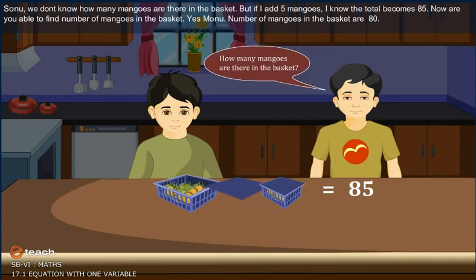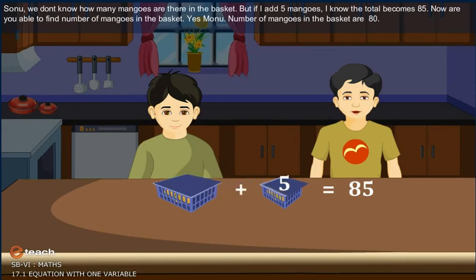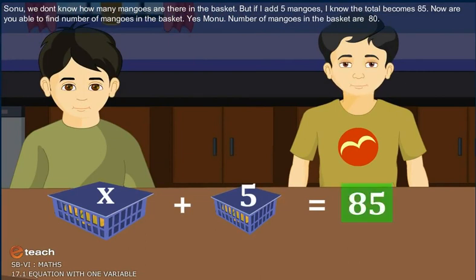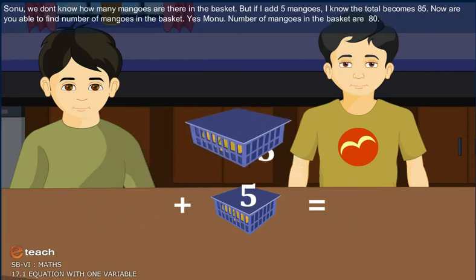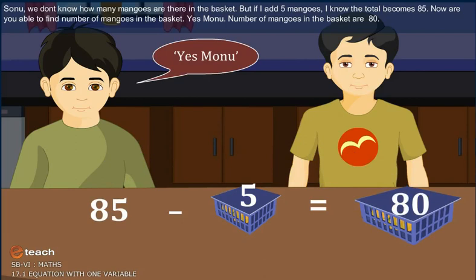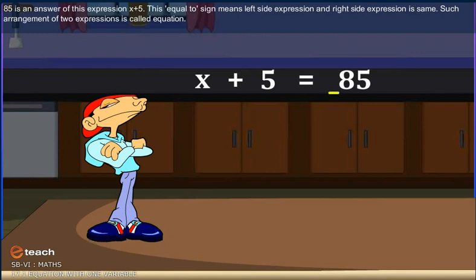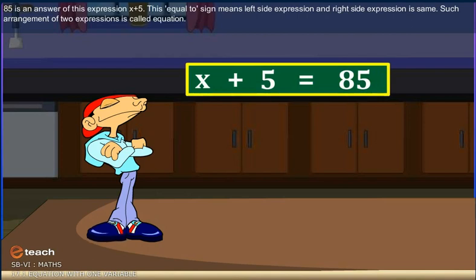Sonu, we don't know how many mangoes are there in the basket. But if I add 5 mangoes, I know the total becomes 85. Now, are you able to find out number of mangoes in the basket? Yes, Monu, number of mangoes in the basket are 80. 85 is an answer of this expression x plus 5. This equal to sign means left side expression and right side expression is same. Such arrangement of two expressions is called equation.